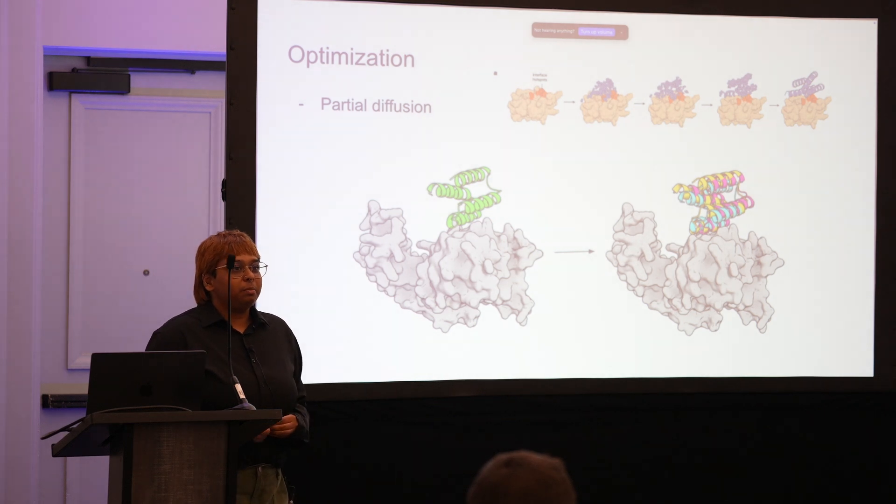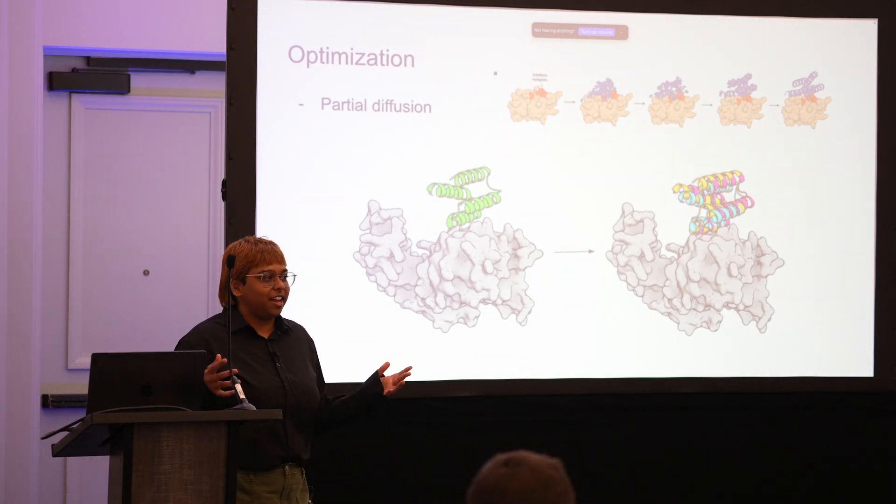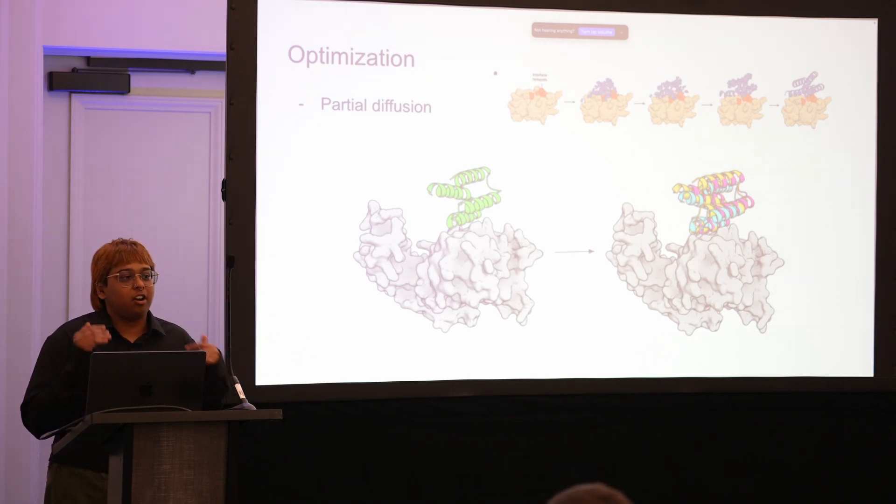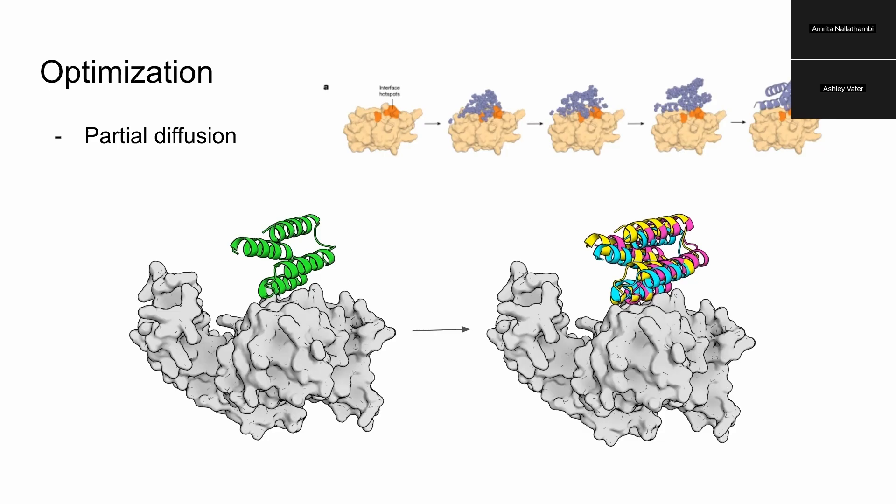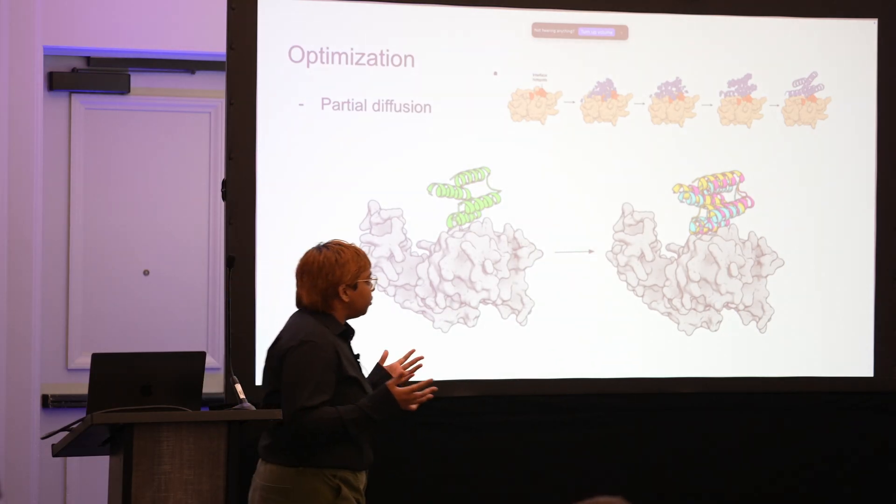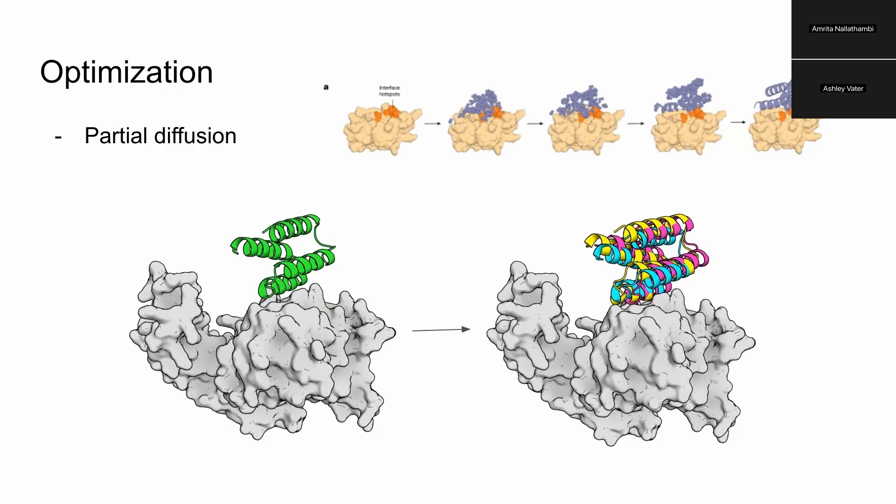What happens if you go through this whole process and you don't come out with anything that AlphaFold thinks is good? This is when you need to start optimizing and there are a couple of ways to do the optimization. Partial diffusion is one of them. Partial diffusion essentially means you're taking something that has been diffused, noising it a little bit to maybe 10 steps, and then denoising it again. This gives you a few different poses.